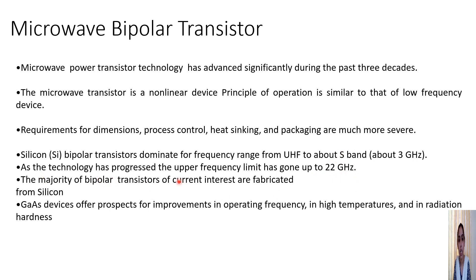The majority of bipolar transistors of current interest are fabricated from silicon. Most microwave transistors are still made from silicon, even though gallium arsenide devices offer prospects for improvements in operating frequency, high temperature operation, and radiation hardness. Even though gallium arsenide is better than silicon in those respects, silicon bipolar transistors are still predominantly employed due to advantages in ease of fabrication.